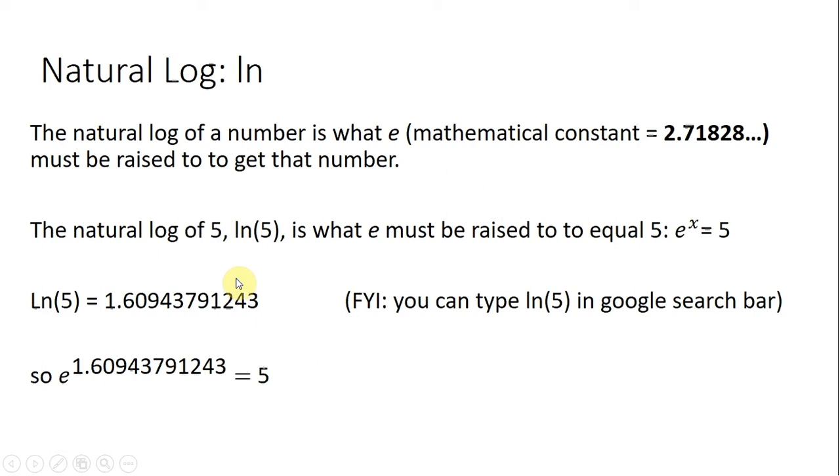So for example, the natural log of 5, written as ln(5), is what e must be raised to to equal 5. In other words, e raised to some number equals 5, and that some number here is the natural log of 5.